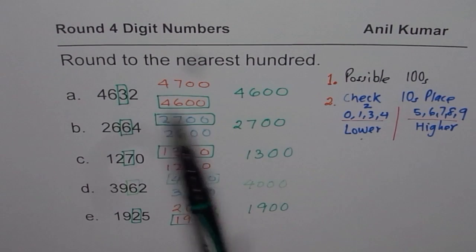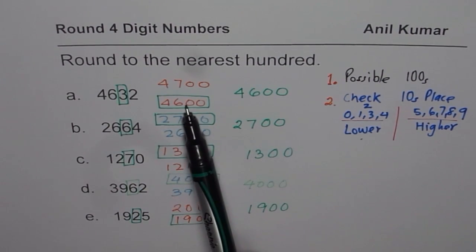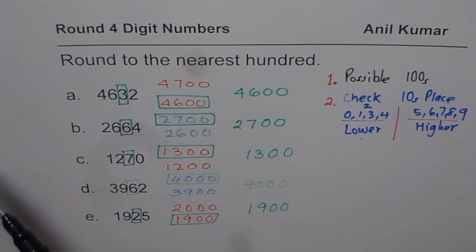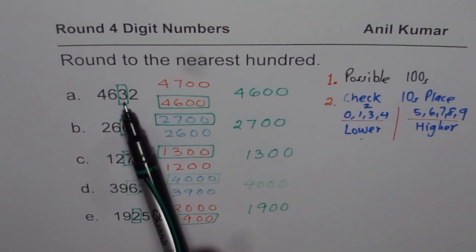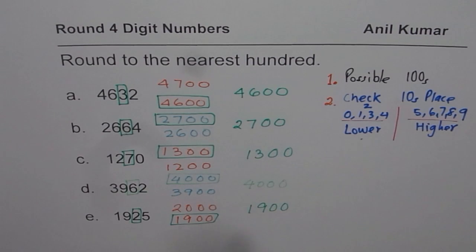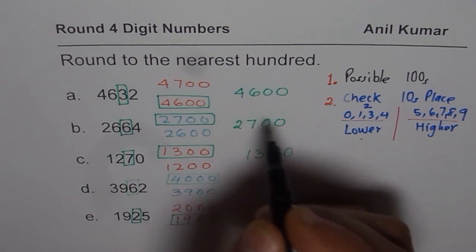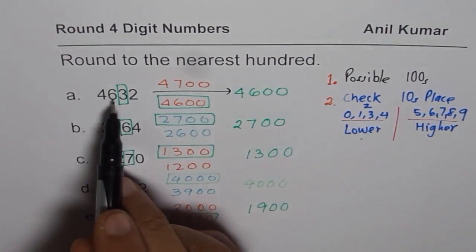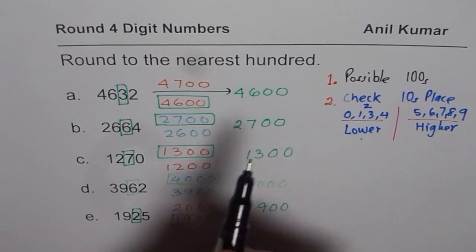If that number is lower than 5, then select the lower option. If it is 5 or more, select the higher option. In this case, it was lower, so we selected the lower option, 4,600. And the number therefore rounds to 4,600. So what we find here is that 4,632 rounds to 4,600.